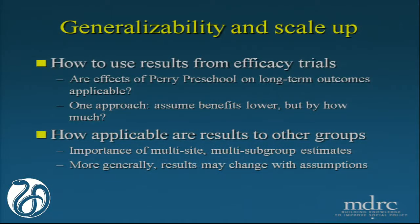One approach I've seen used with NFP recently is to just assume that the benefits will be lower — that once you put it in place in many different areas, it'll be 30% less than what NFP found in its three randomized trials. But there may be other approaches as well. Another question is how applicable are the results to other groups? If you have estimates from one group, how do you modify it or think about how much uncertainty is built in when you try to apply it to other subgroups? In the world of social policy evaluation, this has led to thinking more about doing multi-site studies.